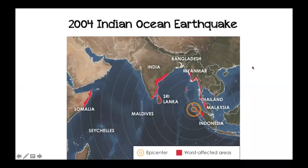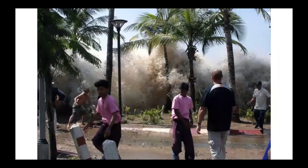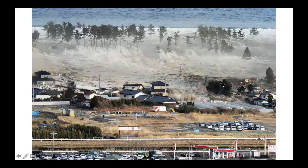The actions of these faults can produce devastating effects. In 2004, an undersea megathrust earthquake occurred in the Indian Ocean, reaching a magnitude of 9.1 to 9.3 on the moment magnitude scale and displacing 30 cubic kilometers of water. It triggered devastating tsunamis radiating outwards along 1,600 kilometers of rupture, resulting in the deaths of hundreds of thousands of people in Indonesia, Thailand, Sri Lanka, India, the Maldives, and many more countries, as well as massive property destruction.